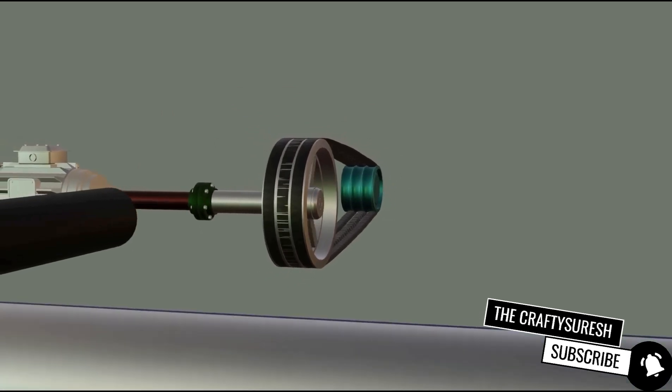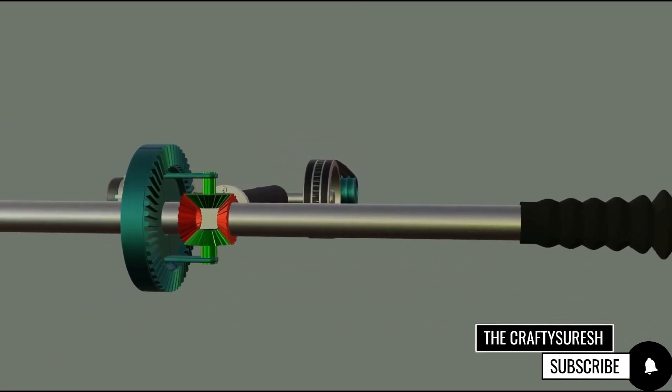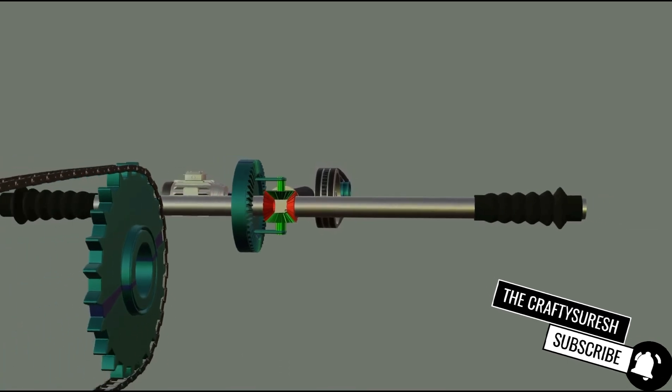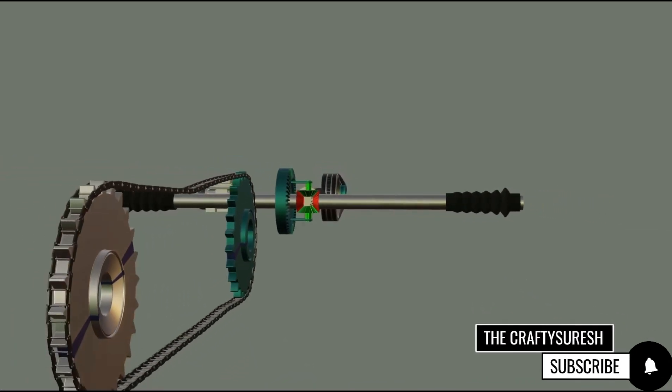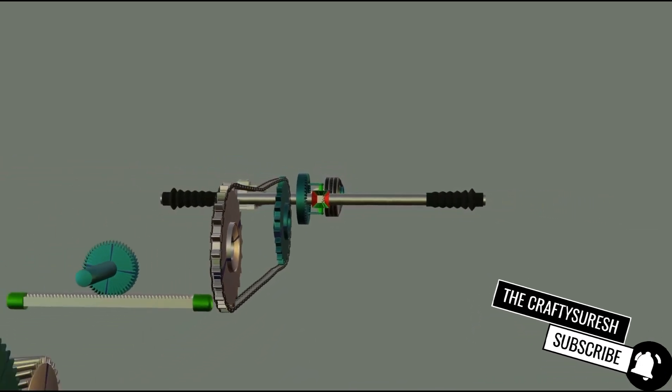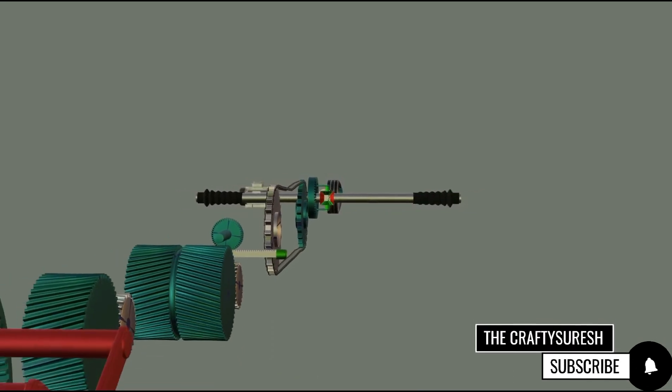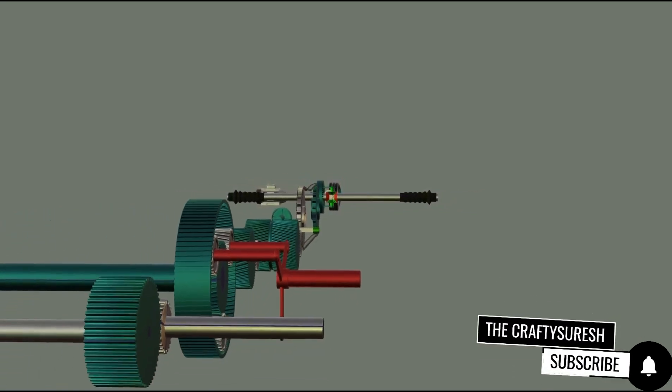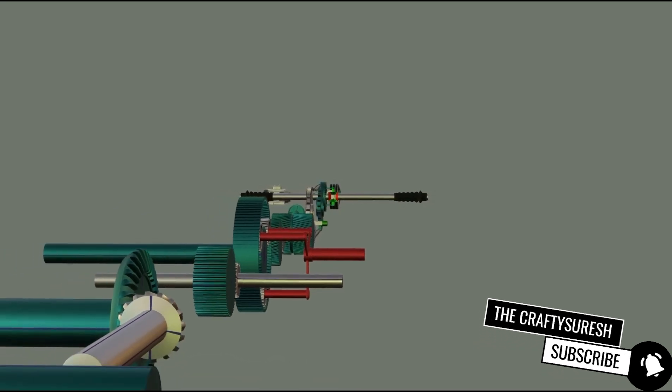That's why the second way of power transmission is gear system. The biggest advantage of this is that slippage is zero. Now if slippage is zero, you can guess from the input how the output will be. So the gear system has developed so much that today multiple types of gear systems are available in the market.